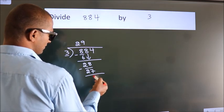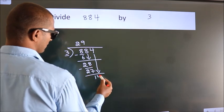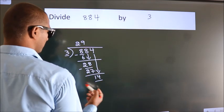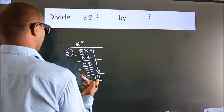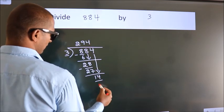After this, bring down the beside number, so 4 down, so 14. A number close to 14 in 3 table is 3 times 4 equals 12.